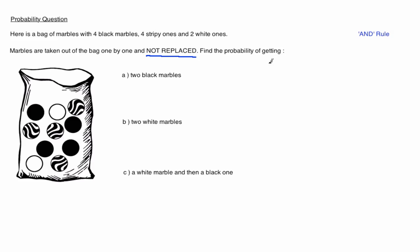Find the probability of getting 2 black marbles, 2 white marbles, and in part C a white marble followed by a black marble.